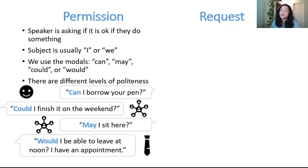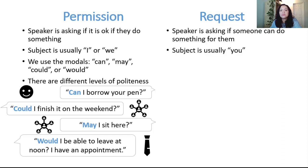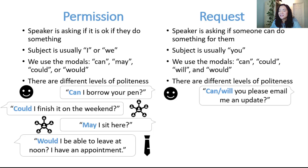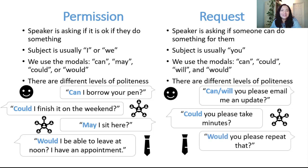Also, a huge part of workplace culture is making requests, and it's important to learn how to do it politely. Requests means that the speaker is asking if someone can do something for them, so the subject is usually you. For making requests, we use can, could, will, and would for requests, again with varying levels of politeness. Can you or will you please email me an update to a fellow co-worker? Could you please take minutes to a fellow co-worker or a supervisor? Would you please repeat that to a supervisor or stranger? Notice that any time you make a request or ask permission, you can make it even more polite with the addition of please.